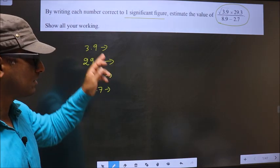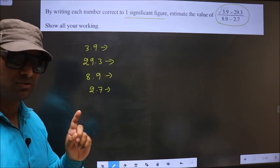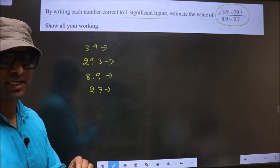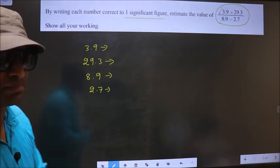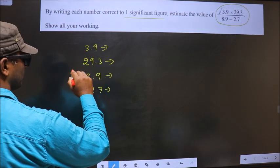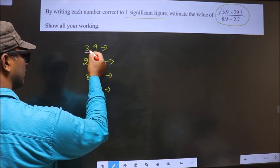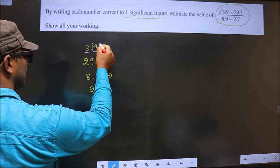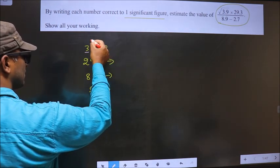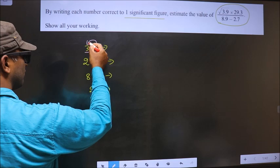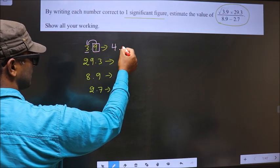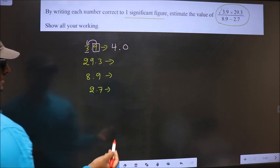Now, let us round each number to one significant figure. To do that, we should look at the second significant number, starting from this side. This is the first significant number. This is the second significant number, which is 9. 9 is greater than 5, so we should add 1 to this, making it 4. And in the rest of the places, you put 0.